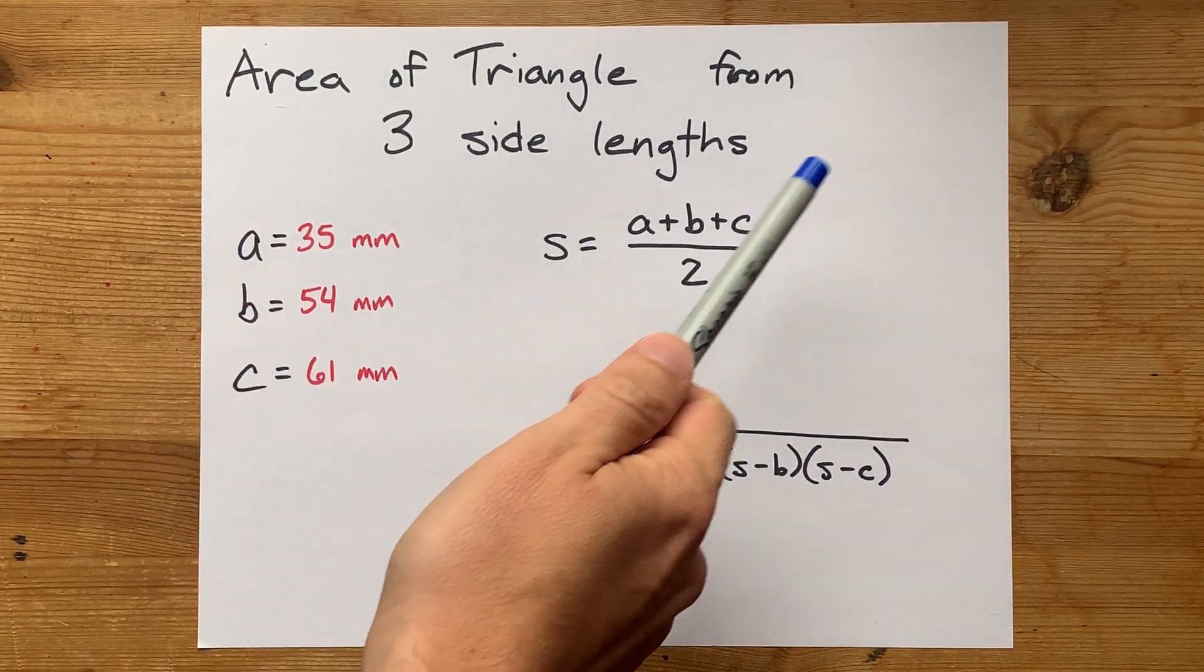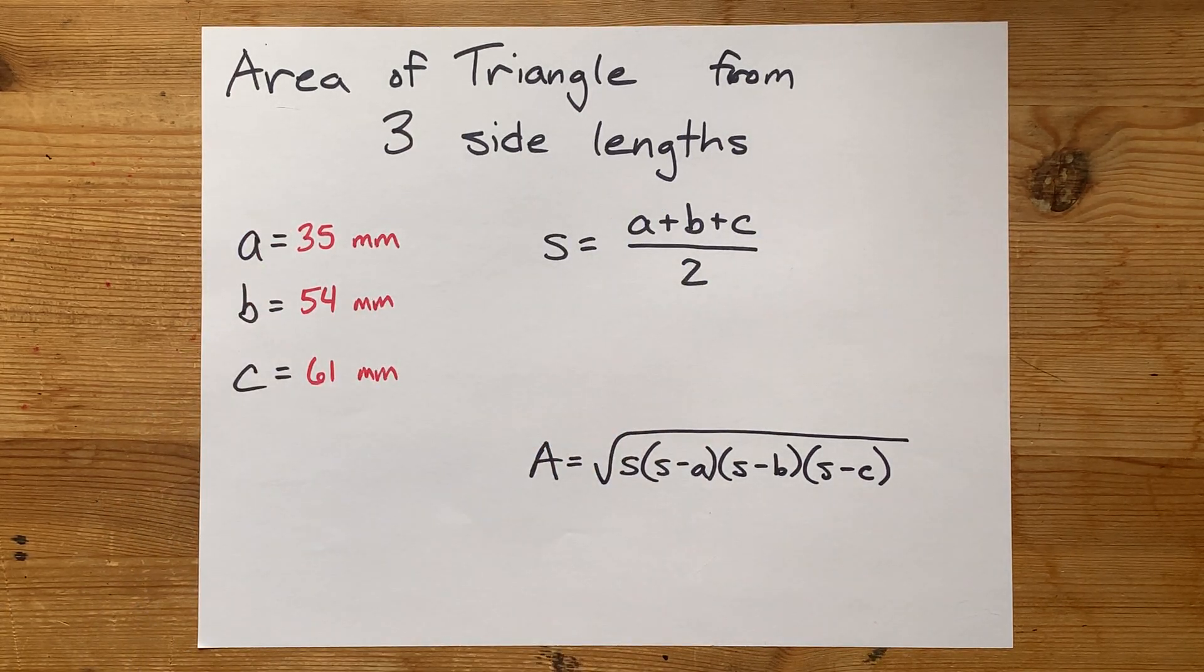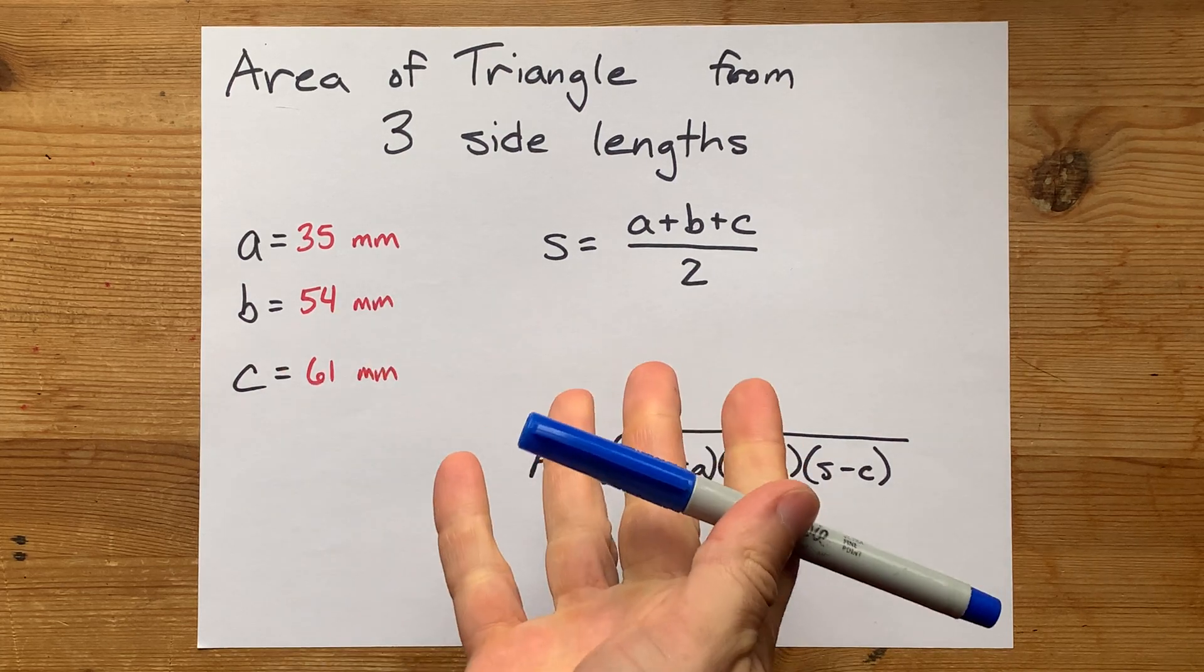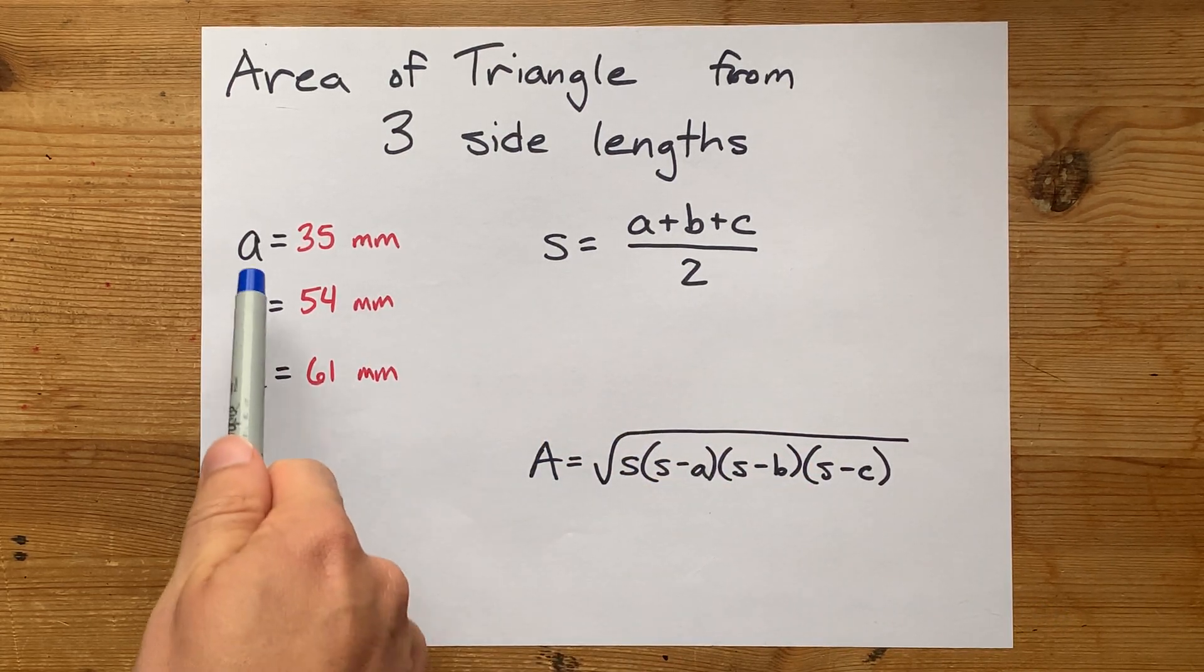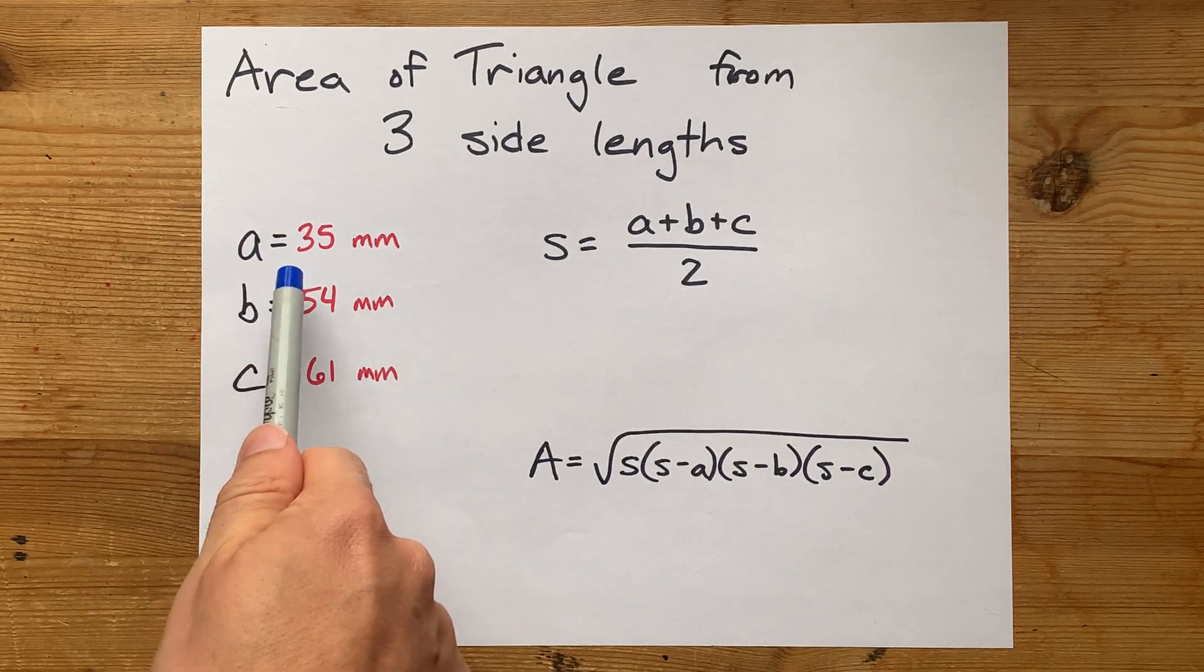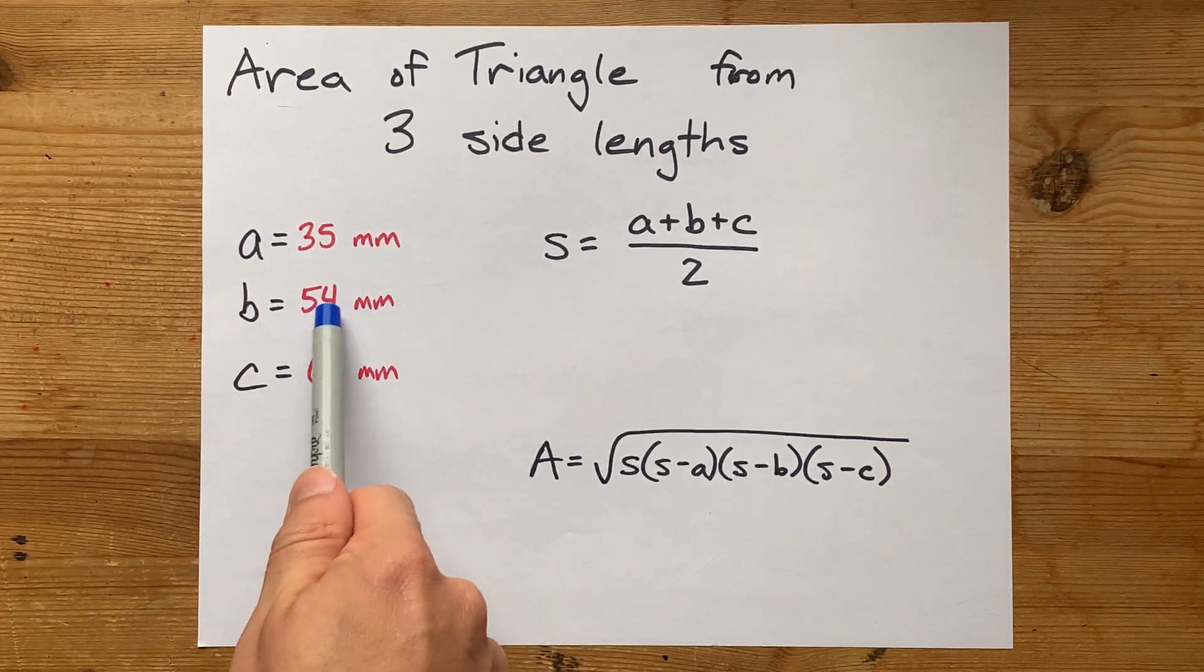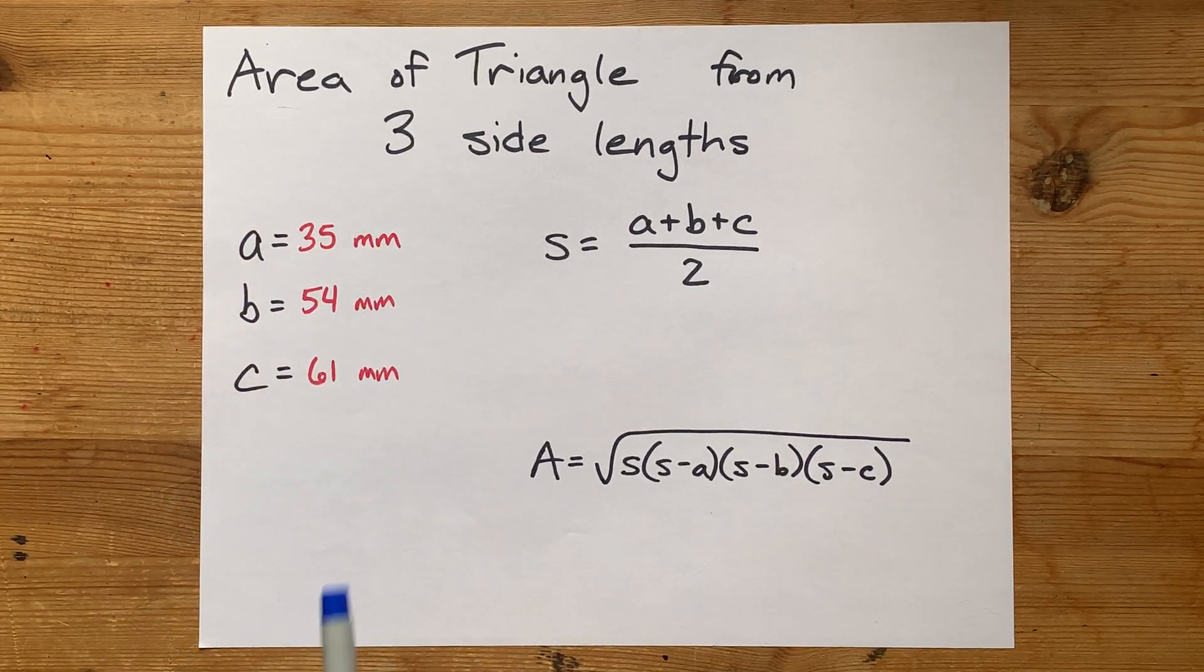We're going to do the area of a triangle based on the three side lengths of that triangle, so we're not given any information about the angles. This comes from a question I was asked on Discord with the three side lengths being 35mm, 54mm, and 61mm. Those are all the same unit, which is ideal.